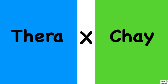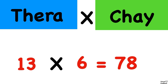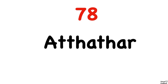All right, let's do the next one. Tera times che. Tera times che. What is tera in English? If you said 13, excellent. And what is che in English? If you said six, very good. So we have tera times che, 13 times six. 13 times six equals 78. Tera times che equals 78. And 78 in Hindi is atattar. Atattar.